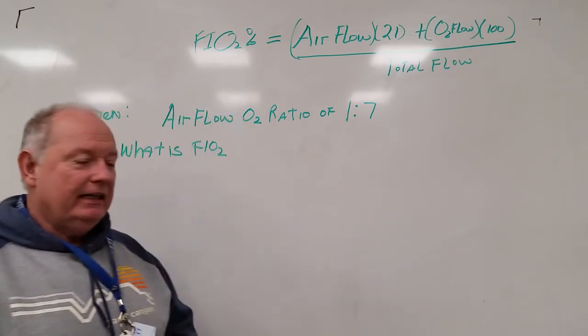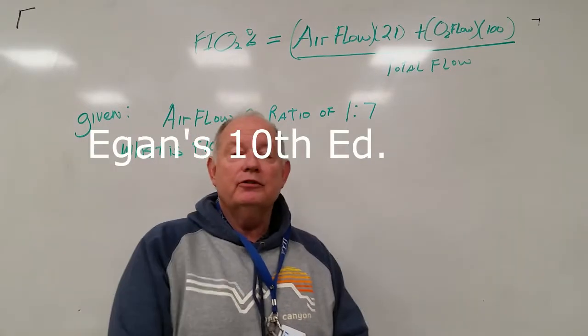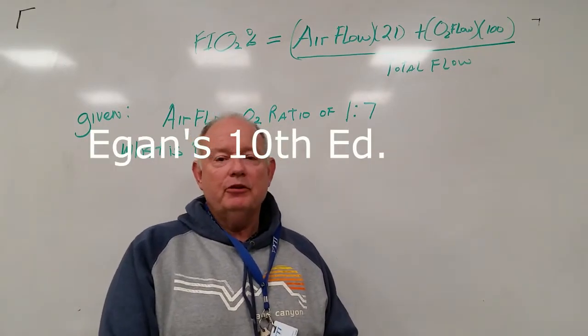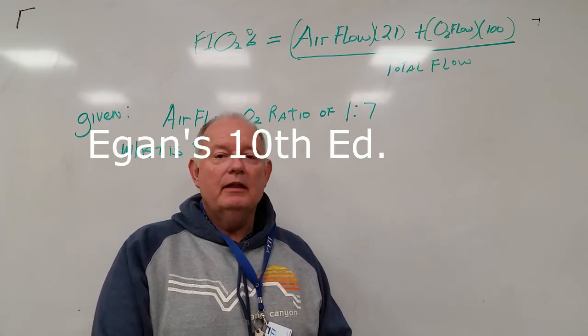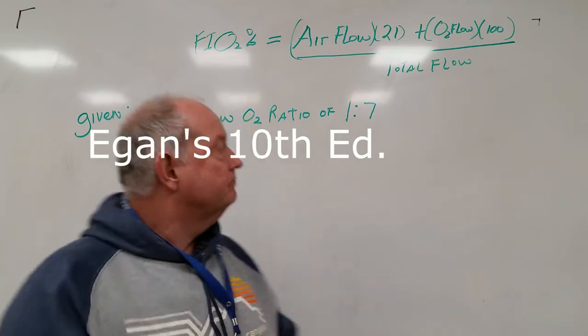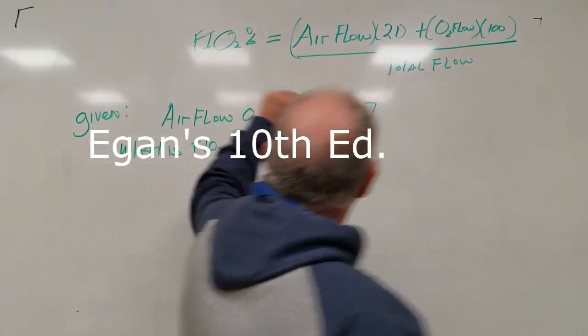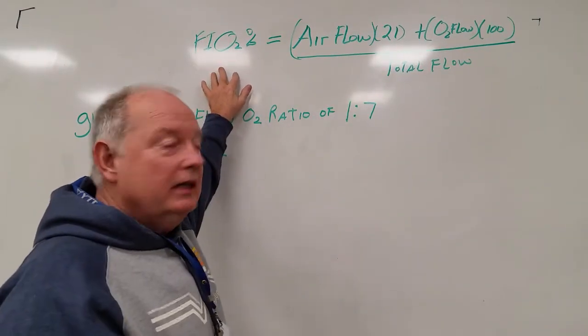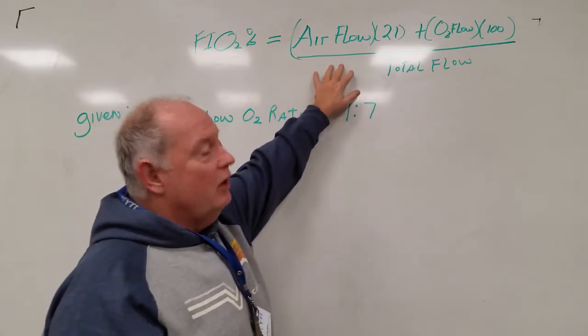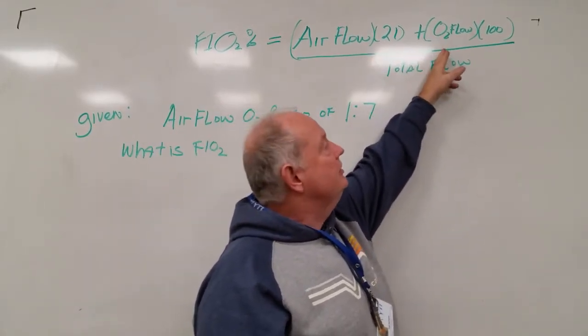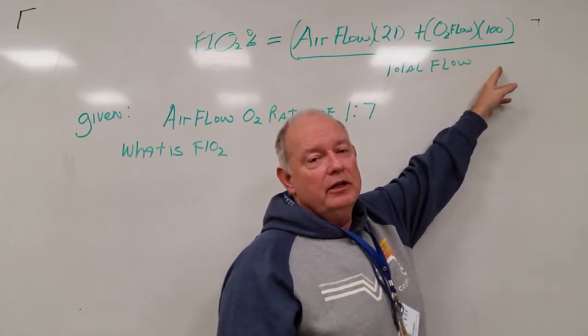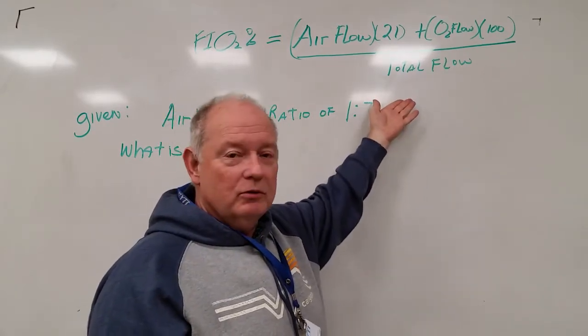The formula is in Egan's book, chapter 38 of Egan's book, box 38-1. There is the formula. This formula is here. FiO2 equals air flow times 21 plus oxygen flow times 100 divided by the total flow.